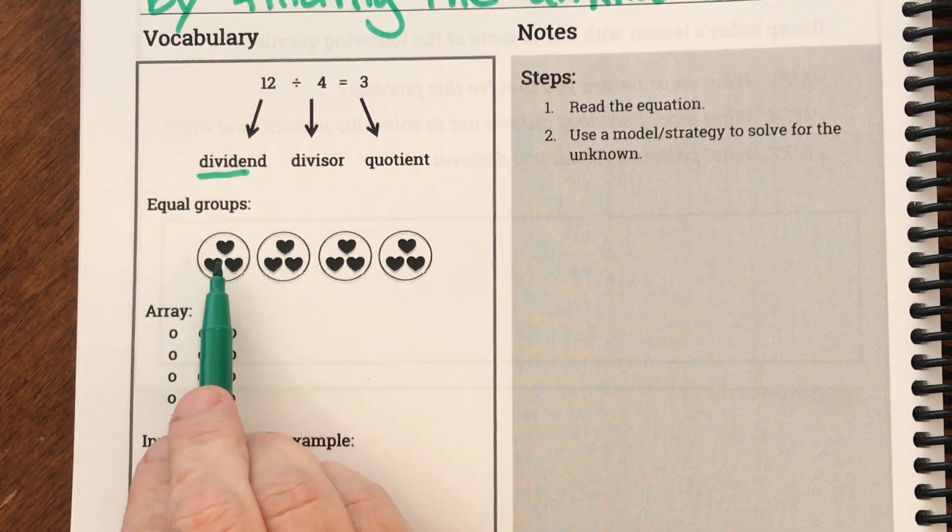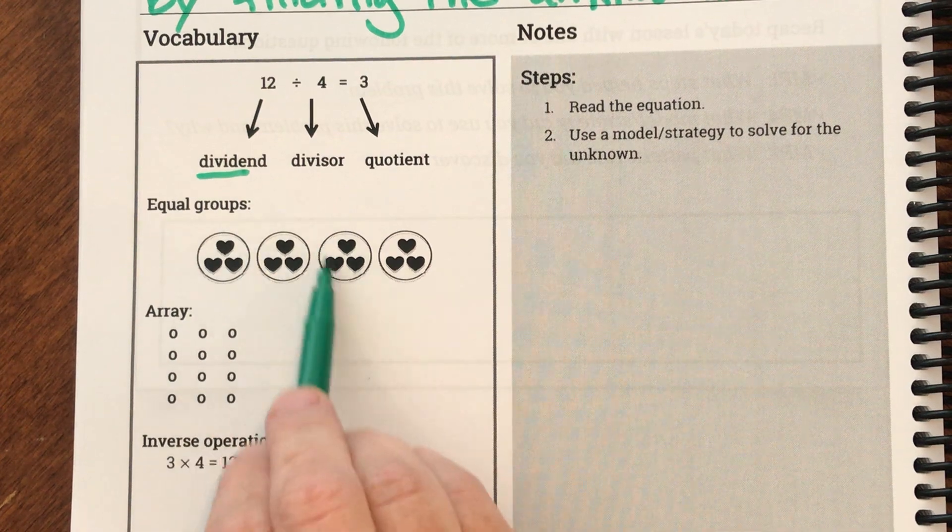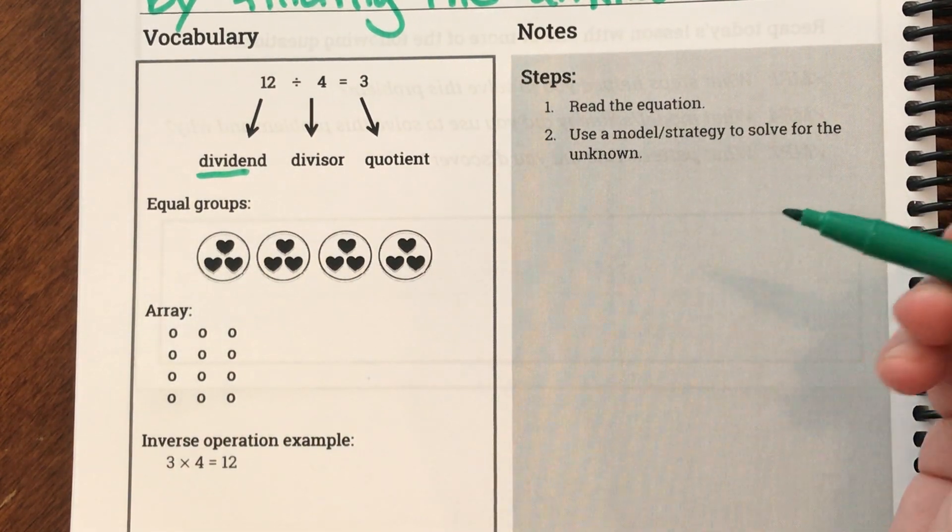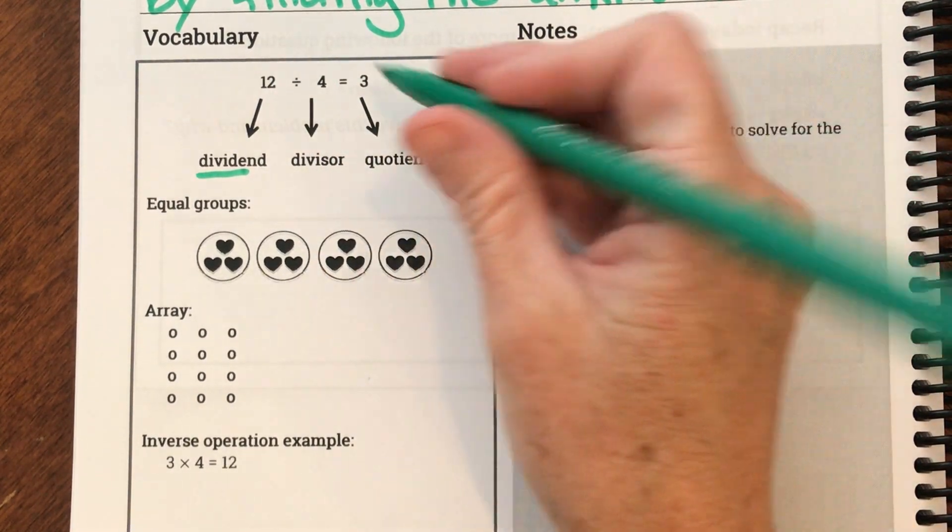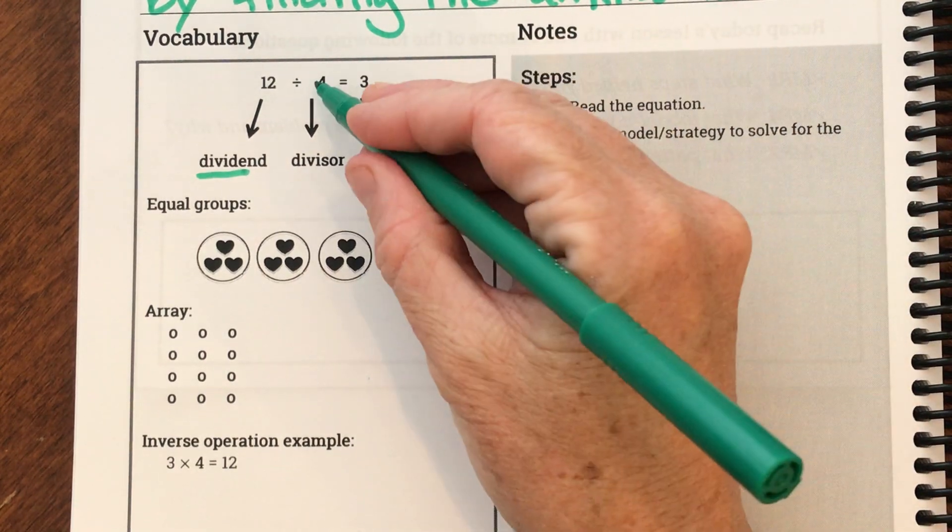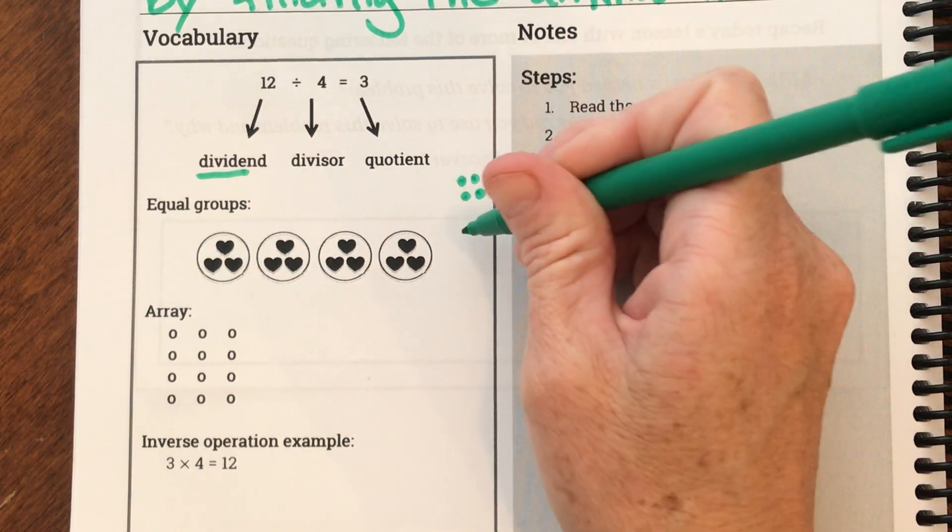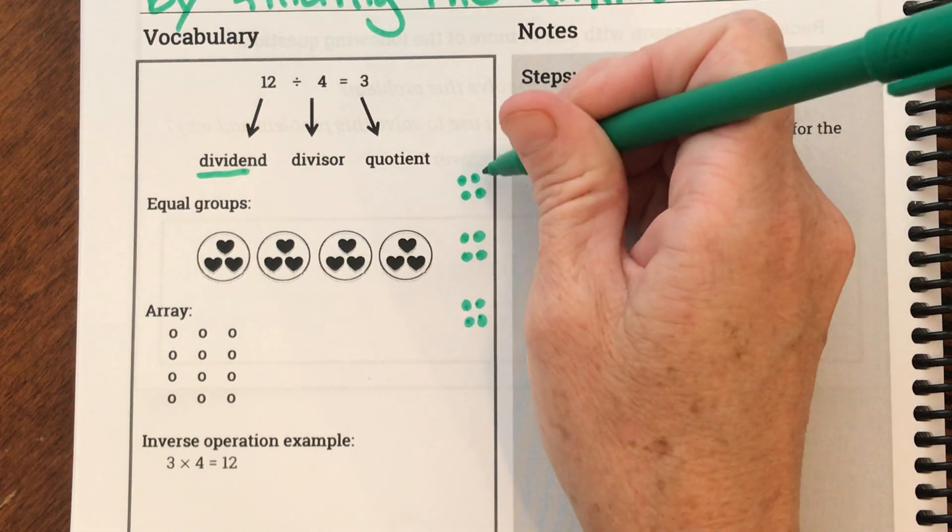So here I have 12, and it's been divided into four groups, and there's three in each group. But what I want you to note, friends, is it also could tell me that I had 12 and I put four in each group. So I could see this differently because I could say I have 12 and I went one, two, three, four in a group, five, six, seven, eight, nine, ten, eleven, twelve.